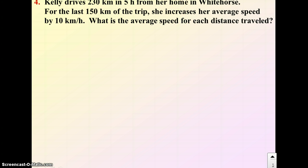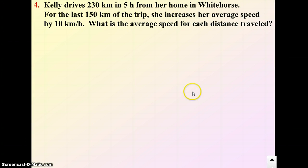Example 4. We're told that Kelly's going to drive 230 kilometers in 5 hours from her home in Whitehorse. For the last 150 kilometers of the trip, she increases her average speed by 10 kilometers per hour. What is the average speed for each distance traveled? So we're talking about a distance, speed, time situation. So remember that equation: distance equals speed times time. Or if I solve for the variable t by dividing s, time is distance over speed.